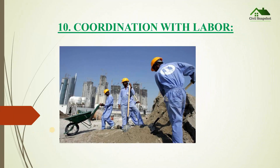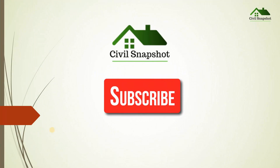Tenth one is coordination with the labor. As a civil engineer, you must know how to deal with the laborers on a site. We need to coordinate with the laborers and know how to manage them at the site. These are the top 10 civil engineering requirements to become a successful civil engineer. If you liked this video, press thumbs up and subscribe to the channel for more videos like this.